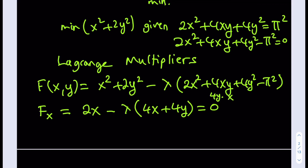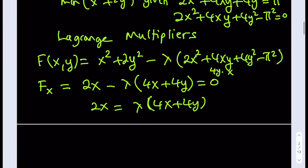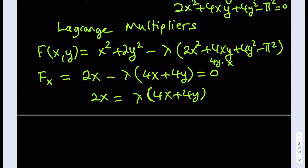We set the partial derivative equal to 0. Isolating lambda — dividing both sides and noting 2 is a common factor — gives us lambda equals X divided by (2X plus 2Y). So we've expressed lambda in terms of X and Y from the first equation.